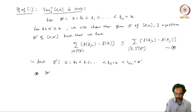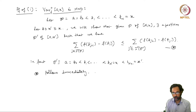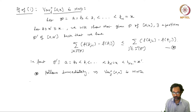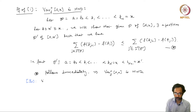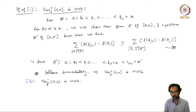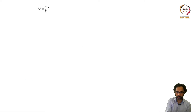This inequality (★) follows immediately, and therefore var⁺(f, [a, x]) is monotonically non-decreasing. Similarly, I leave as an exercise that var⁻(f, [a, x]) is also monotonically non-decreasing. Now, to show that these two are in fact bounded, I will again use the positive variation as an illustration.